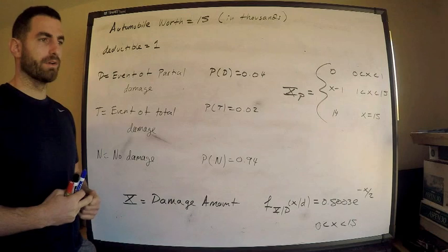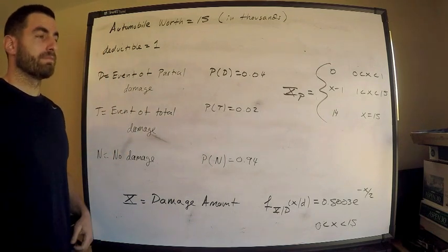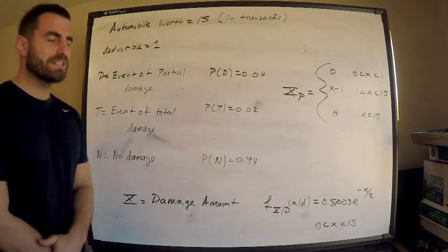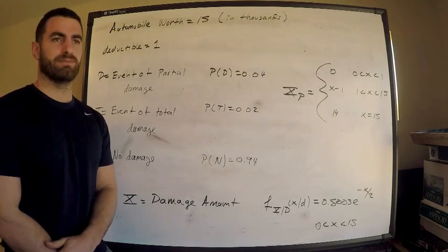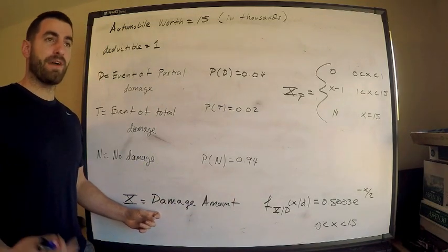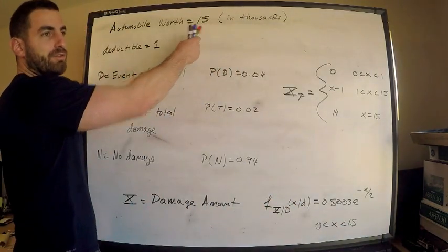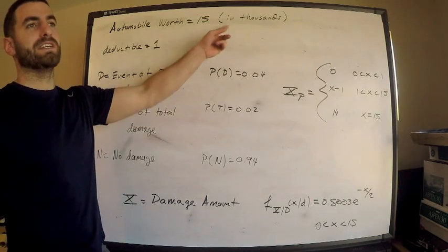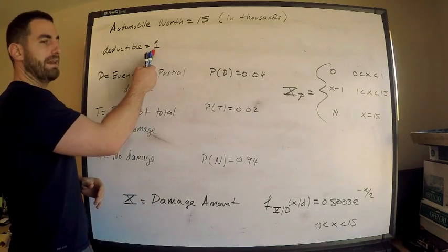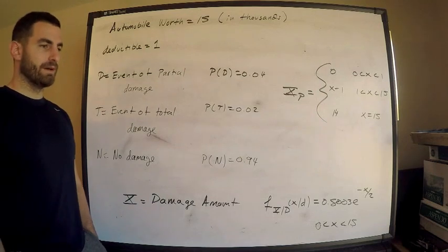So we have an automobile worth $15,000. Be aware that these questions sometimes give values in thousands but write other things inconsistently. The damage amount goes from 0 to 15 in thousands. I changed the automobile worth to 15 to keep all units the same — everything is in thousands. The deductible is 1 (in thousands), and the automobile is worth 15,000.